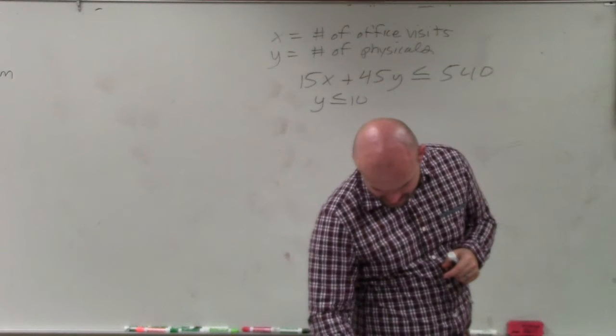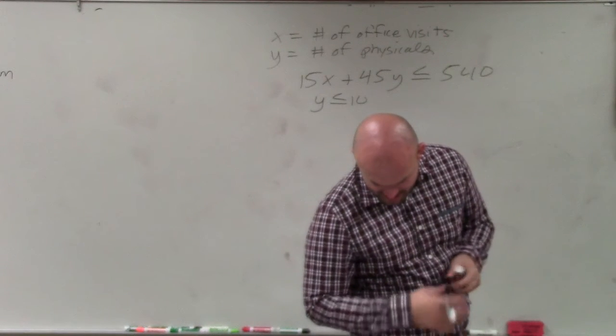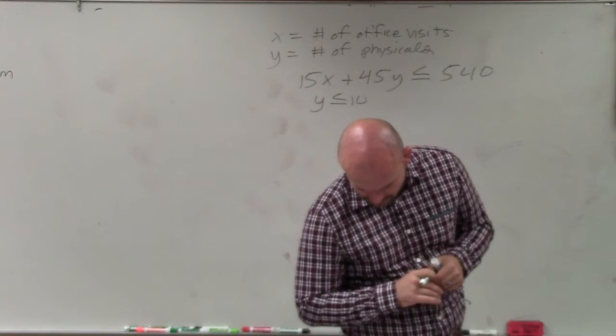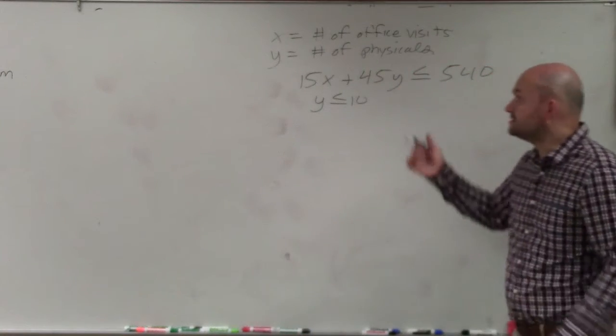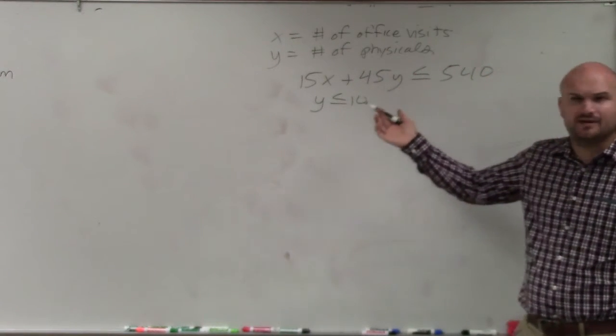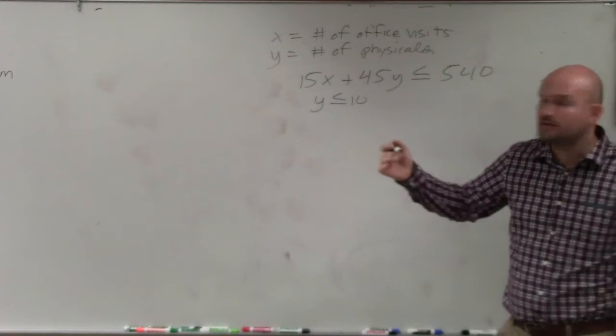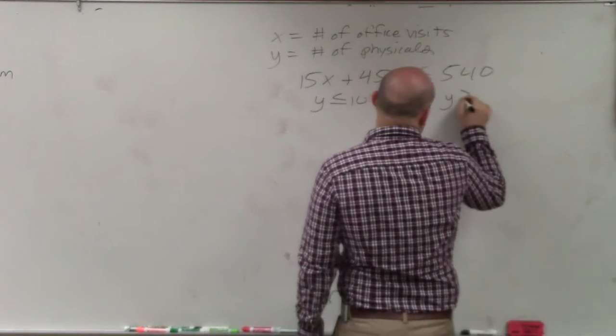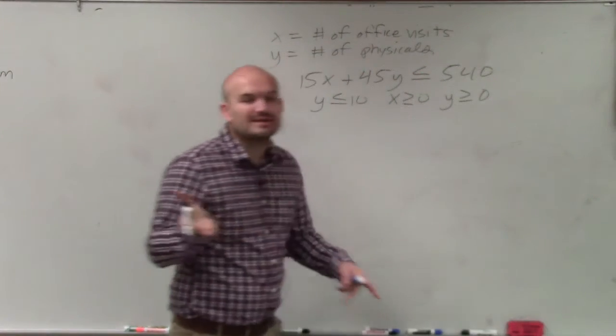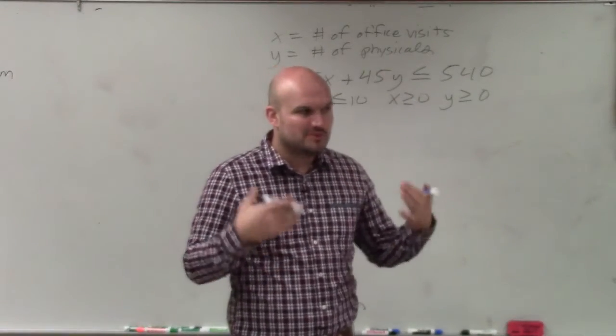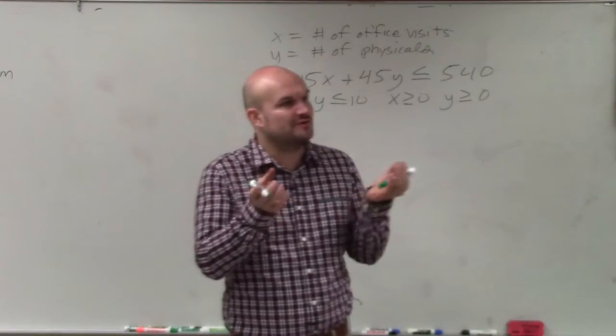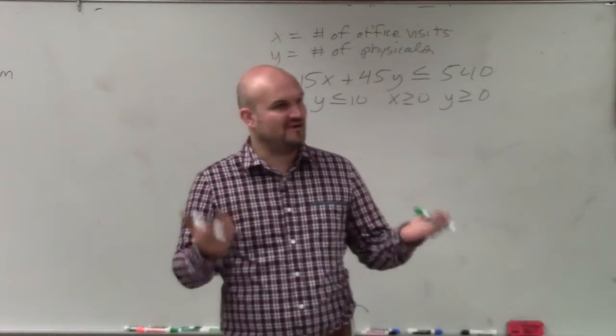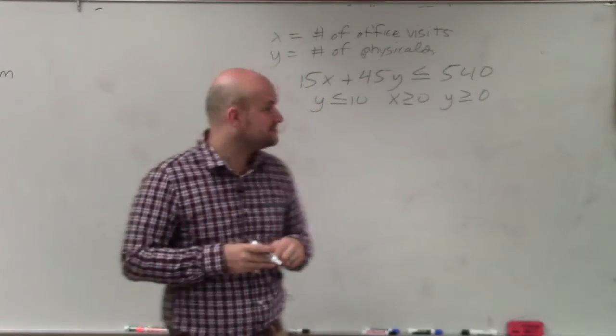Is there anything else going on? Well, yeah, the other thing is, you've got to think about this. Can you have negative physicals or negative office visits? No. So we can also say that x has to be greater than or equal to 0, and y has to be greater than or equal to 0. And that was one of the things, guys, usually in your linear programming problems, majority of the time, your feasible region is going to be in the first quadrant. That's not always going to be the case, but majority of the time, our variables, we're looking only for those positive values.